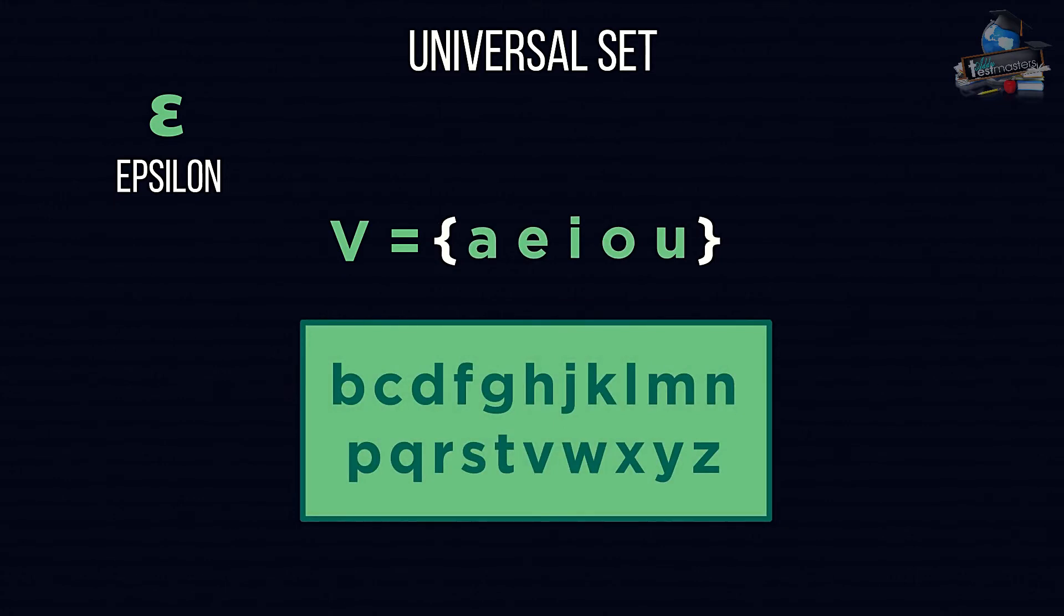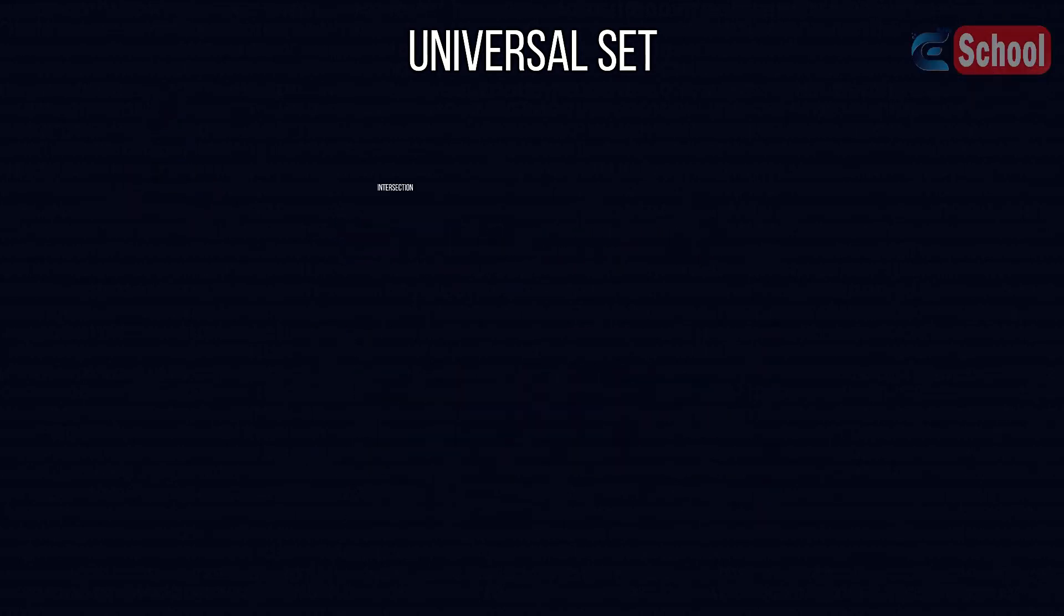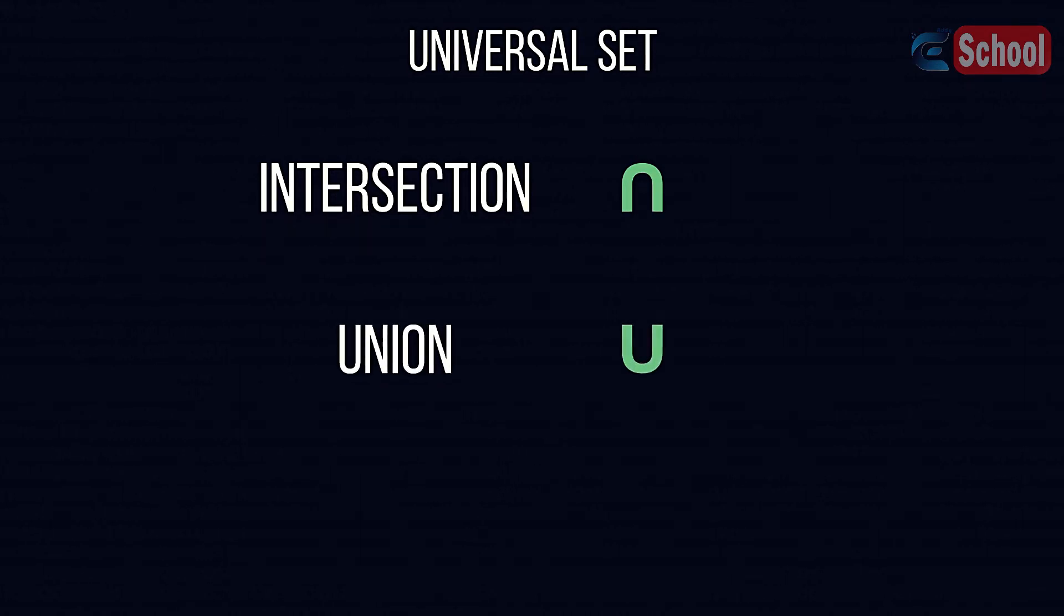When we have two sets, we can look at how they are linked. We use this symbol, called intersection, to say something is in both sets we are looking at. We can use this symbol, union, to say that an object is in one set or the other. To say an object is not in a set, we use an apostrophe, like this.